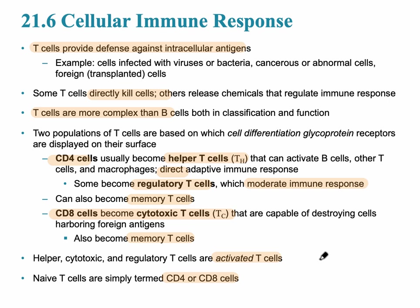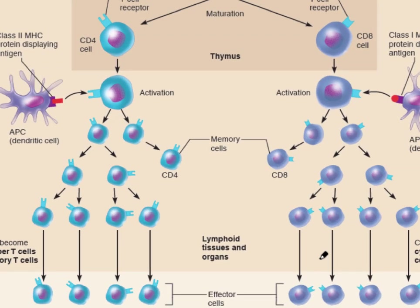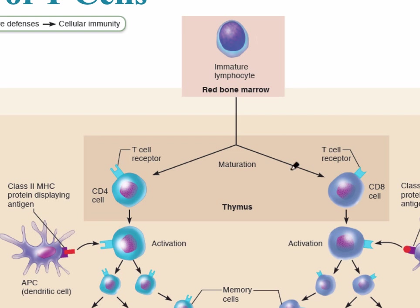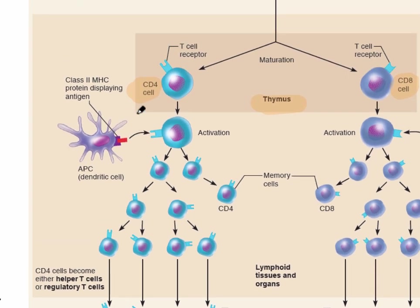Let's look at how these cells develop and differentiate. Beginning with an immature lymphocyte in the bone marrow, that lymphocyte can either become a CD4 cell — which we see here on the left — or a CD8 cell. That maturation is what occurs in the thymus. Once activated, there is an MHC protein displayed by the antigen — basically a protein code in the membrane that identifies an antigen — and we have these MHCs on all of our cells.